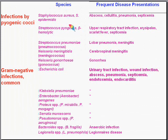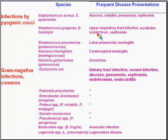Staph and strep are ubiquitous — they can infect just about everything, including superficial tissues, skin, deep tissue, and almost anywhere in the body. Common presentations for staph include abscesses, cellulitis, pneumonias, and septicemia. Strep follows much the same pattern, including upper respiratory infections, erysipelas, scarlet fever, and septicemia. Think of these collectively as the general pyogenic cocci, our first category.